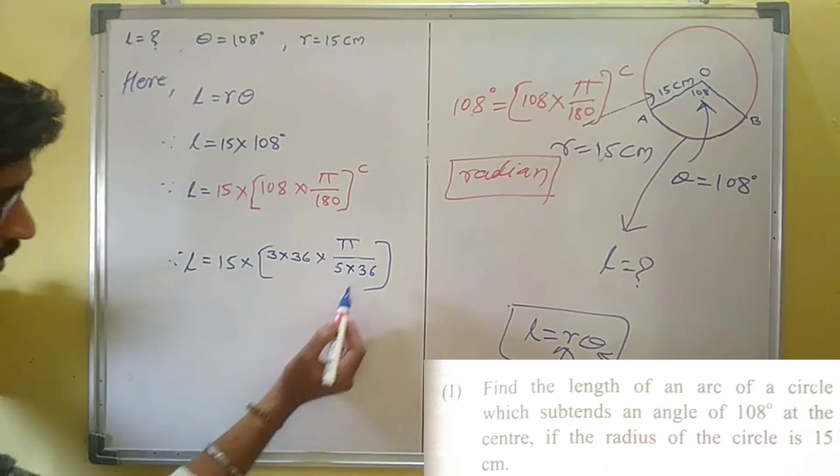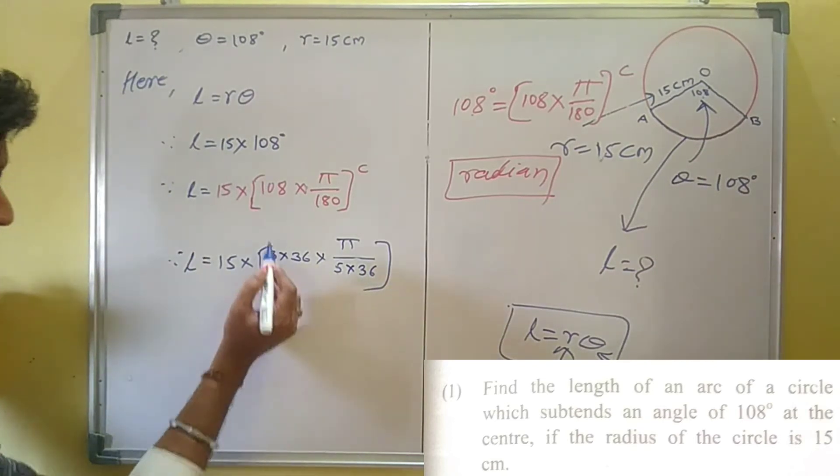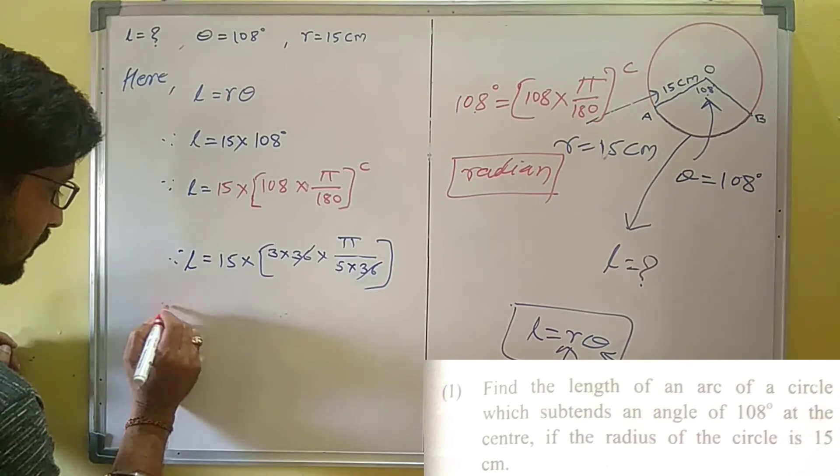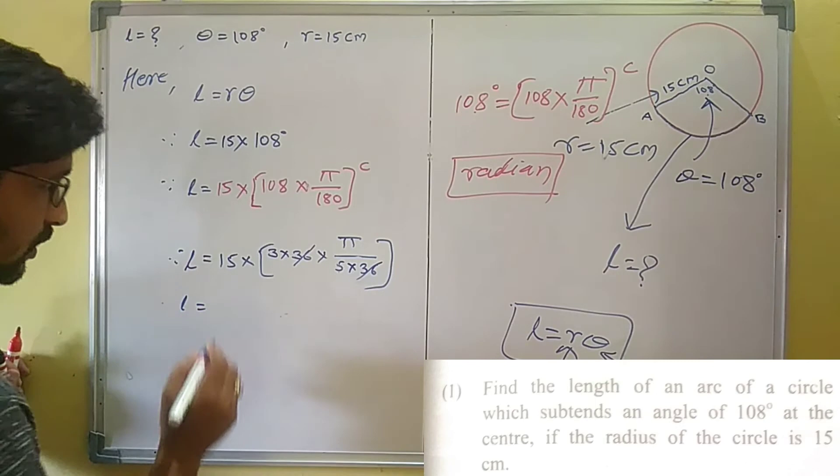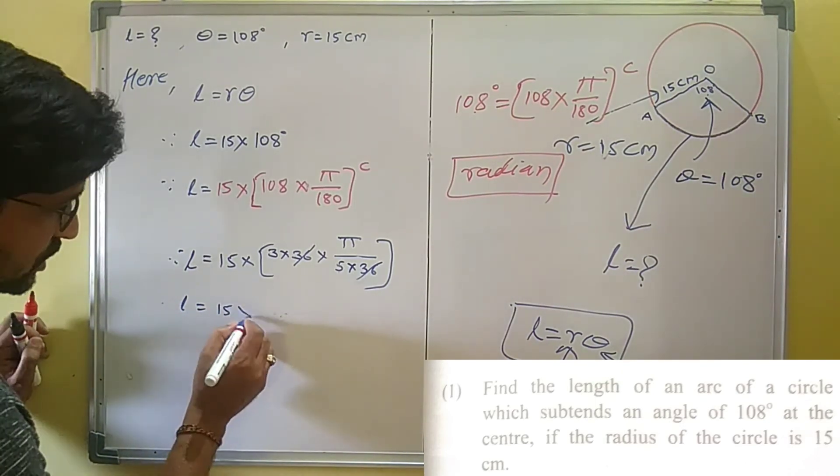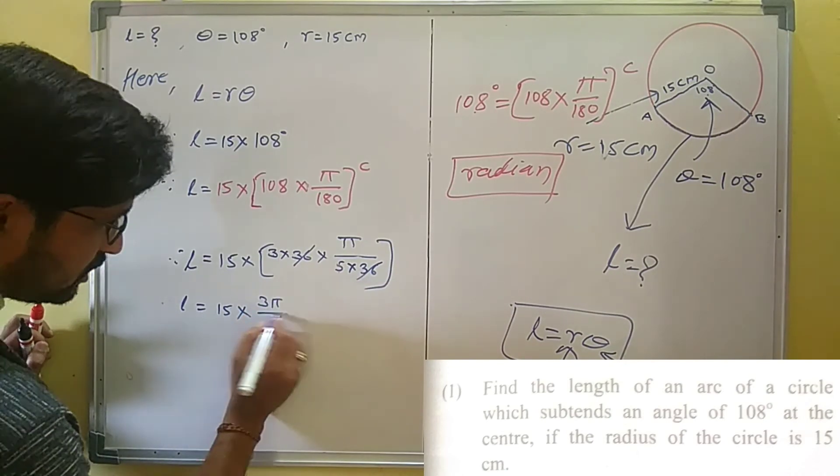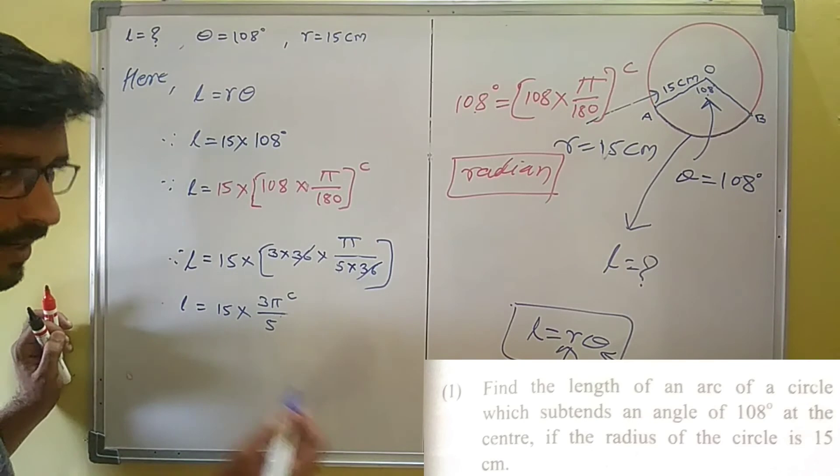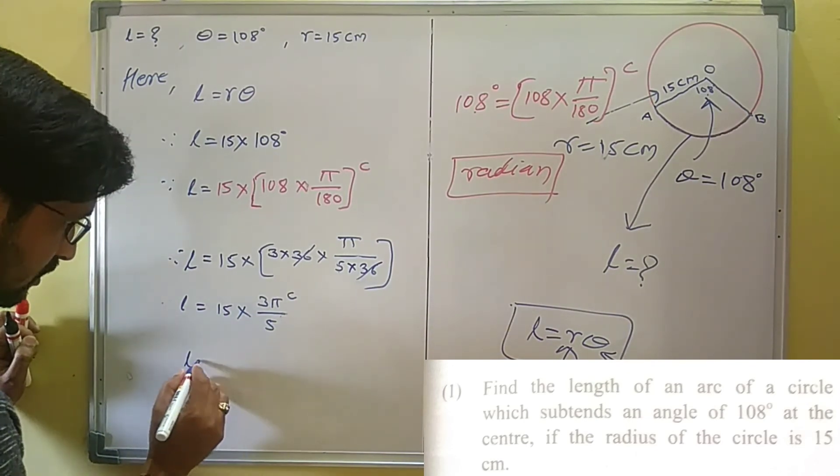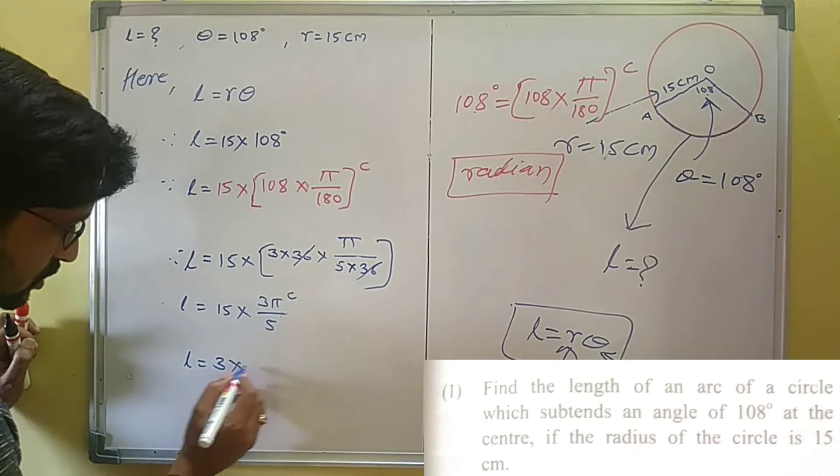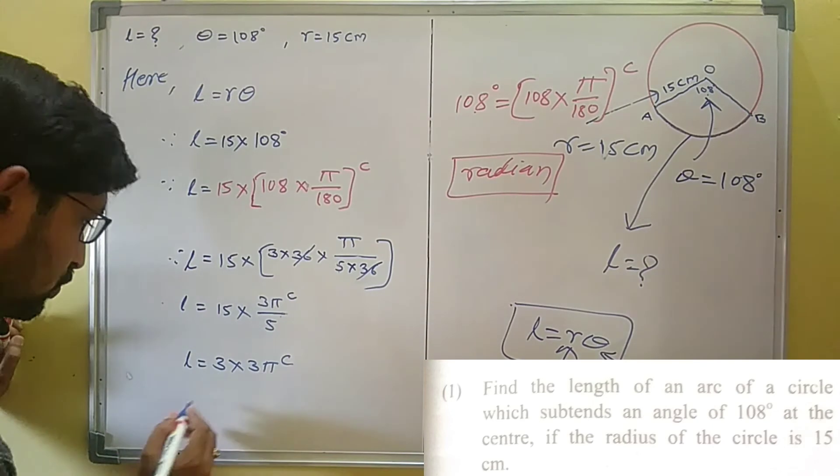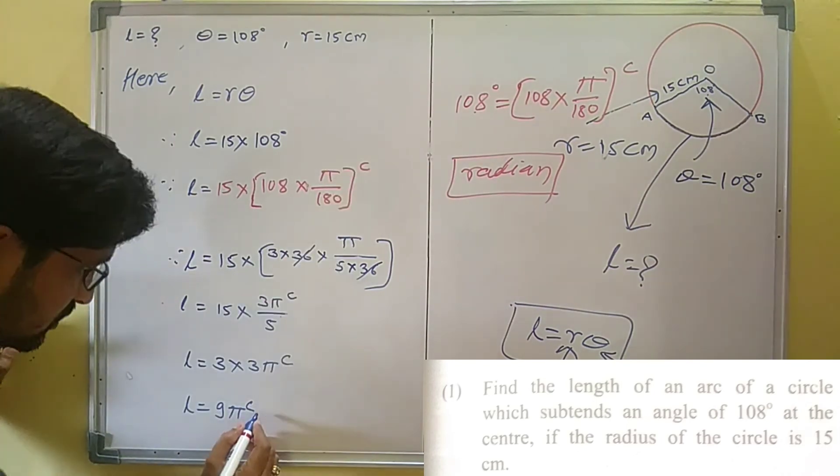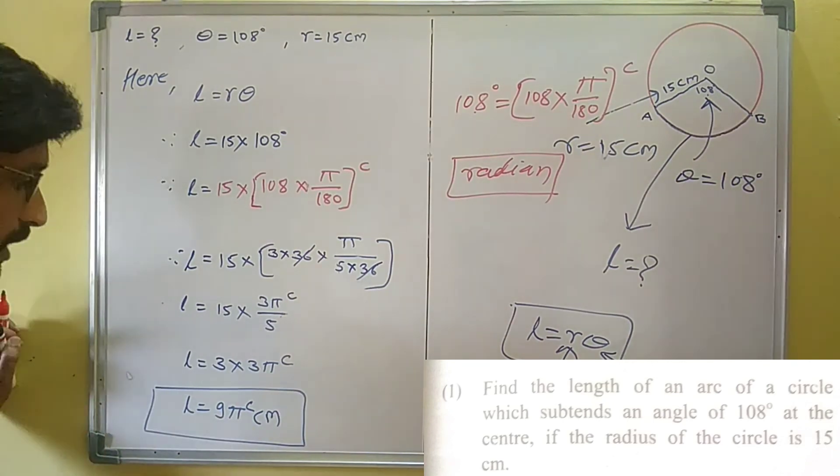Then next, divide 15 by 5. So here L is equal to 3. Three threes are fifteen, so 3 into 3 pi radian. Now multiply 3 into 3, that is L is equal to 9 pi radian. But our unit is centimeter, so write centimeter. So length of an arc is equal to 9 pi centimeters.